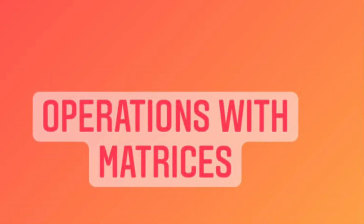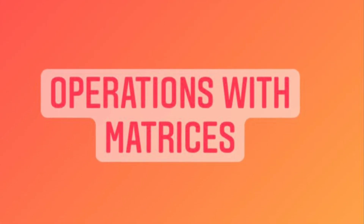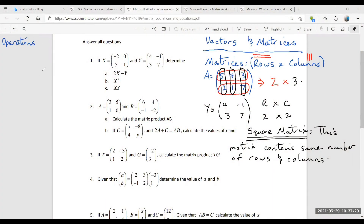This worksheet is about the operations involving matrices. The three operations are addition, subtraction, and multiplication. For addition and subtraction, you can only add and subtract matrices that have the same order — meaning the same number of elements in the same format. For example, if X is a 2x2 matrix and Y is a 2x2 matrix, you can add or subtract them because they have the same order.